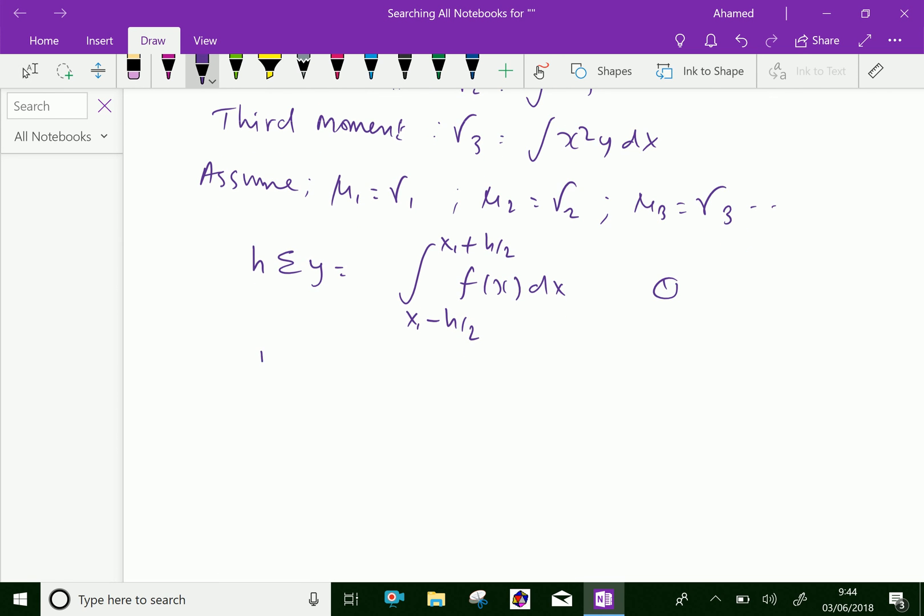The second equation is: h∑xy = ∫[x₁ - h/2 to xₙ + h/2] xf(x)dx.